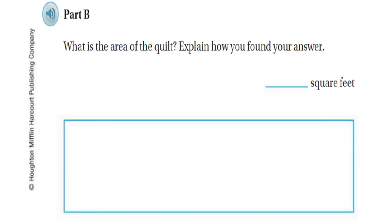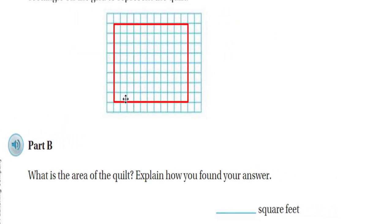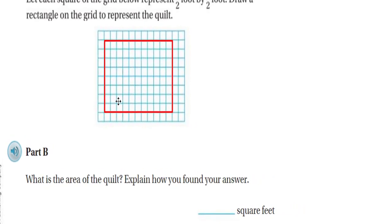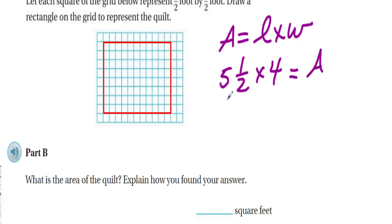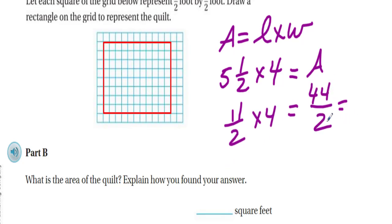Part b asks for the area of the quilt. We know area equals length times width. So we multiply five and a half by four. Converting five and a half to eleven-halves, then multiplying by four gives forty-four over two, which equals twenty-two. So the area is twenty-two square feet.